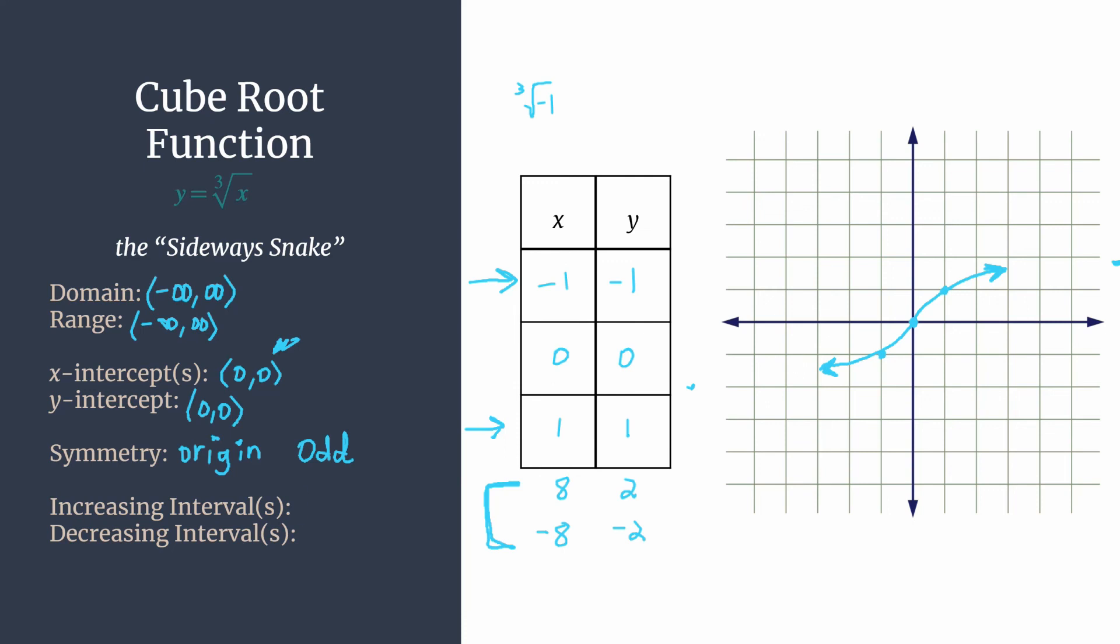So simple enough, right, our increasing interval is actually over all real numbers, there are no decreasing intervals. And that's a quick look at the cube root function. So don't forget that tip to keep this one separated from the cube function. And you've got your sideways snake here.